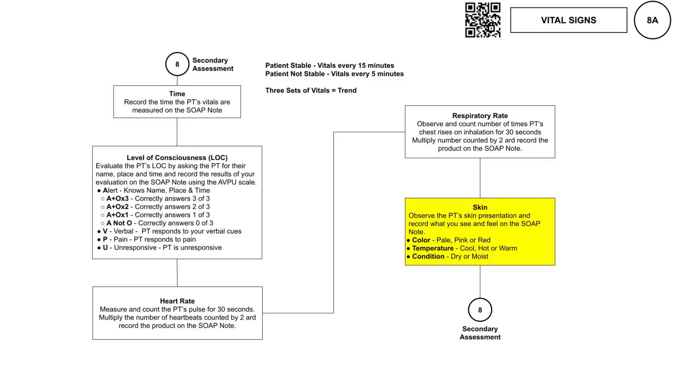Skin Assessment: Evaluating the patient's skin involves checking color, temperature, and condition at specific sites such as the clavicle or inside the lower lip to accommodate varying skin tones. Observations include color — pink, red, or pale — temperature — cool, warm, or hot — and condition — moist or dry. These provide insights into circulation, hydration, and potential health issues. Record what you observe on the SOAP note.